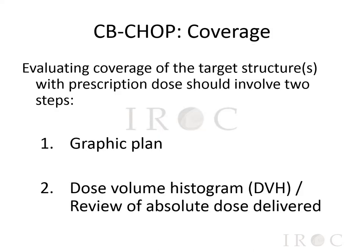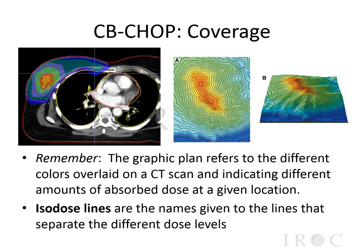Once you've evaluated contours and the beams being used in the plan, the next thing to evaluate is coverage. Evaluating coverage of the target structures with prescription dose should involve two steps: first, looking at the graphic plan or the CT scan image with dose volumes overlaid; and second, looking at the dose volume histogram or DVH to review the absolute dose being delivered. The graphic plan refers to the different colors overlaid on a CT scan indicating different amounts of absorbed dose at a given location, and isodose lines are the names given to the lines that separate the different dose levels.